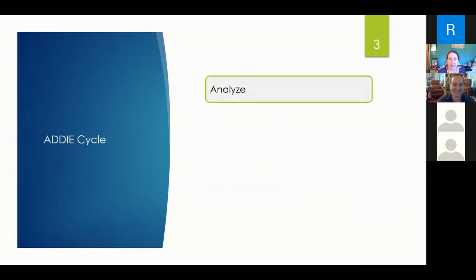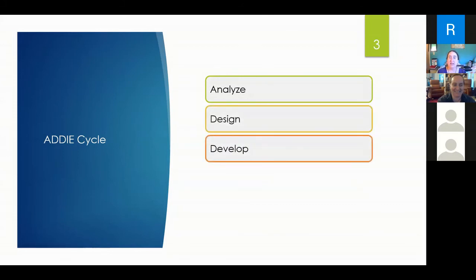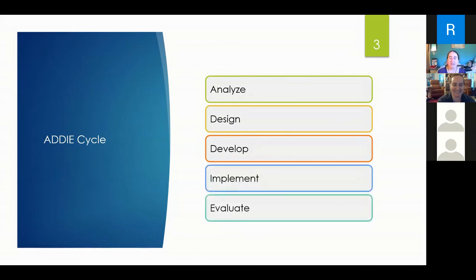Today we're going to talk about a couple of main topics. First is something we call the ADDIE cycle — a framework for how to organize your thoughts and put things together. We're going to talk about SMART goals, because SMART goals are the heart of everything. I'll show you a worksheet developed specifically for this group, and then three different templates for the specific content to use in the worksheet. First, the ADDIE cycle. It has several parts: analyze, then design, then develop, then implement, and finally evaluate.